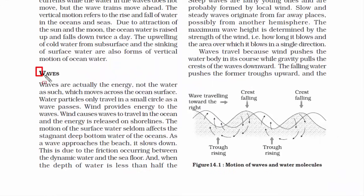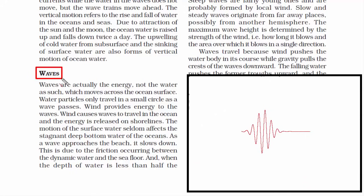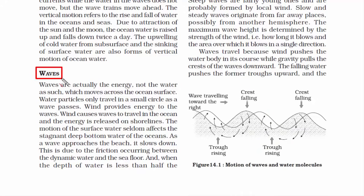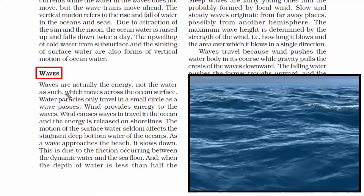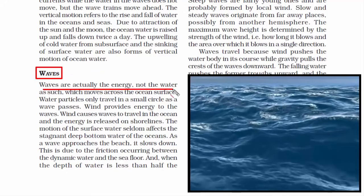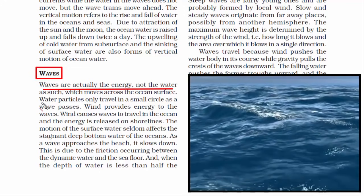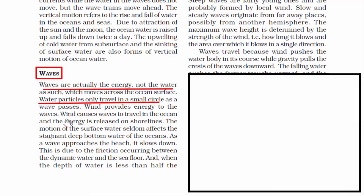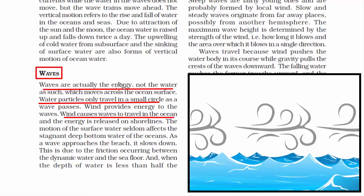The first topic is waves. A wave is a to-and-fro motion — back and forth around a reference point — wherein energy moves away from the source in the form of a disturbance. When you look at ocean waves, they are actually energy and not water. Water particles travel through this energy. It is the wind that provides this energy — that's why we say wind causes waves to travel in the ocean.